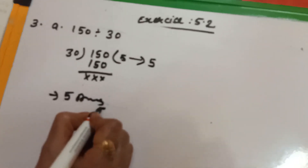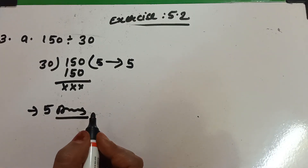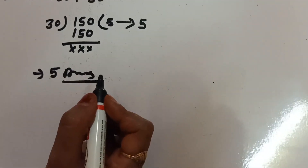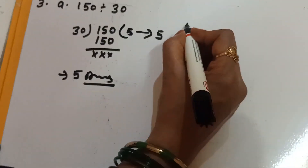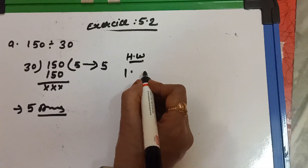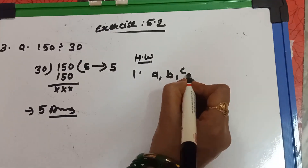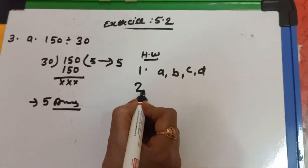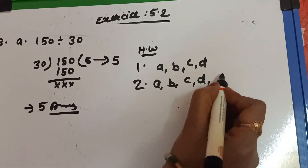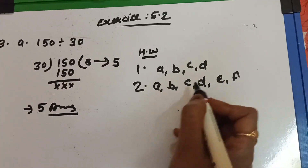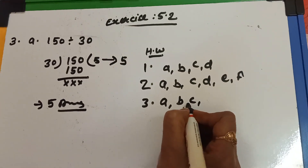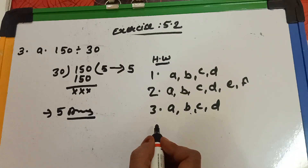I think you will be able to do this exercise with this explanation. Homework for you: from question number 1, do (a), (b), (c), and (d); question number 2, do (a), (b), (c), (d), (e), and (f); and question number 3, do (a), (b), (c), and (d) in your maths notebook. Thank you.